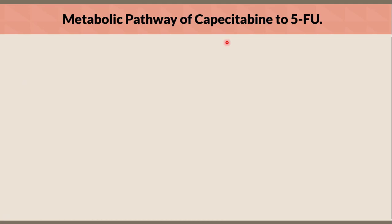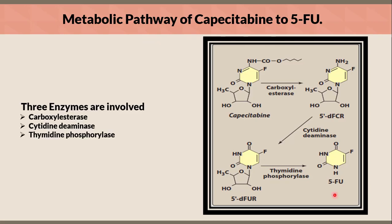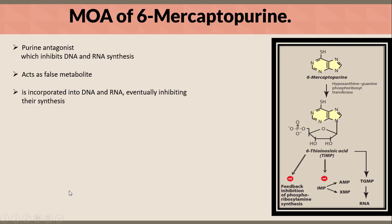Metabolic pathway of capecitabine to 5-fluorouracil: capecitabine is a pro-drug that is converted to 5-fluorouracil by three enzymes: carboxylesterase, cytidine deaminase, and thymidine phosphorylase.